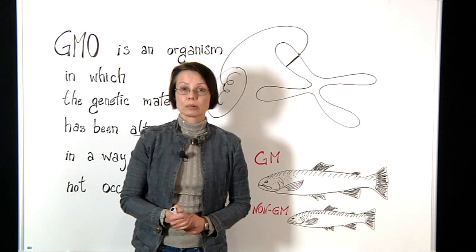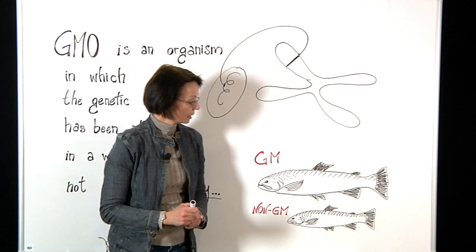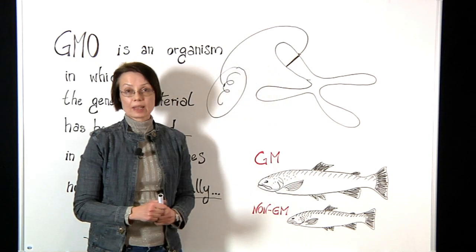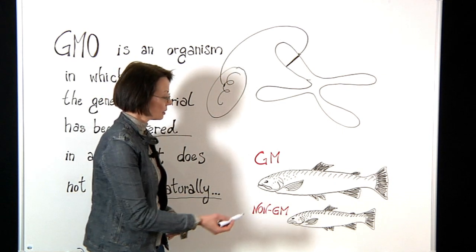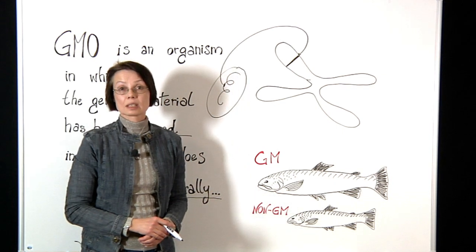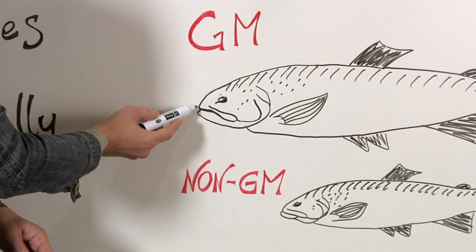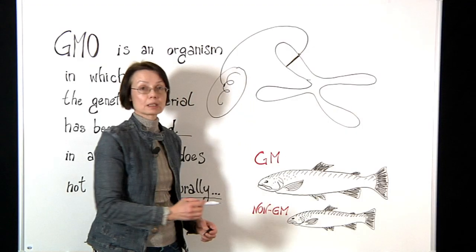I would like to briefly explain to you one example which is quite advanced in the pipeline, and this is a genetically modified salmon. This salmon grows faster than its non-genetically modified counterpart.